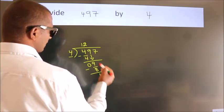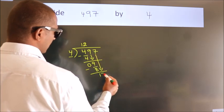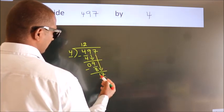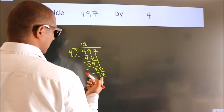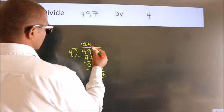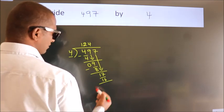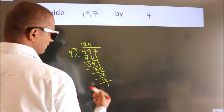After this, bring down the beside number. So 7 down. So 17. A number close to 17 in 4 table is 4 4s 16. Now we subtract. We get 1.